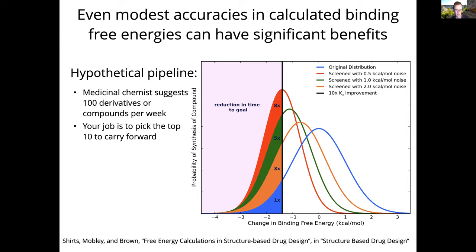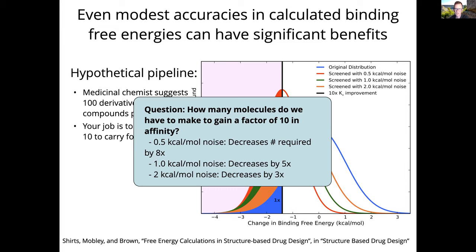One thing we've thought about is how accurate predictions of binding need to be to be really helpful. The basic takeaway is that if you have a method that can predict binding free energies to two kcal per mole accuracy, you can decrease the number of compounds somebody needs to synthesize by about a factor of three. And if you can get half a kcal per mole of error, you decrease compounds needed by a factor of eight. Those are significant gains, especially if each new compound takes a couple of weeks to make. So we're targeting better than two kcal per mole accuracy.